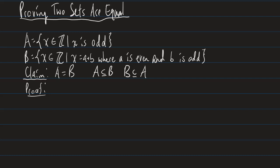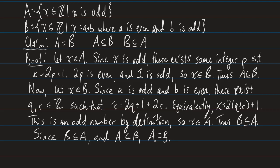If you're taking a proofs class, pause the video and try this yourself. Here's the proof. Let X be an element of A. Since X is odd, there exists some integer P such that X = 2P + 1 — the definition of an odd number. Now 2P is even and 1 is odd, so X must be in B, because B requires X to be the sum of an even and an odd number: here 2P is our even part and 1 is our odd part. Since X was chosen arbitrarily, A is a subset of B.